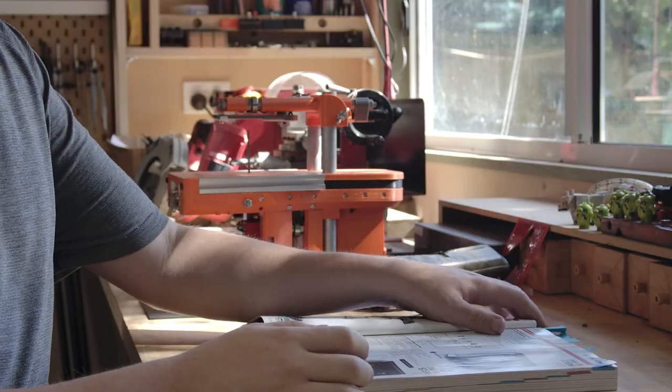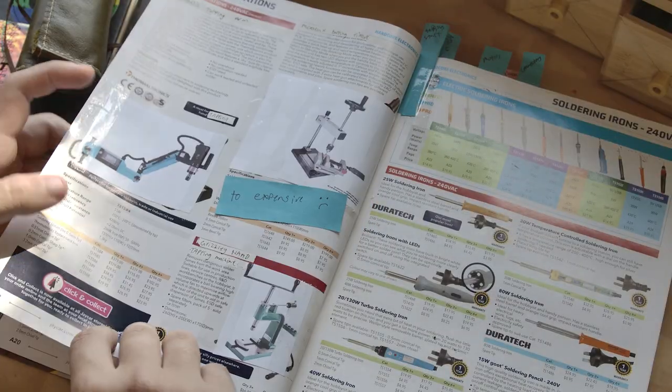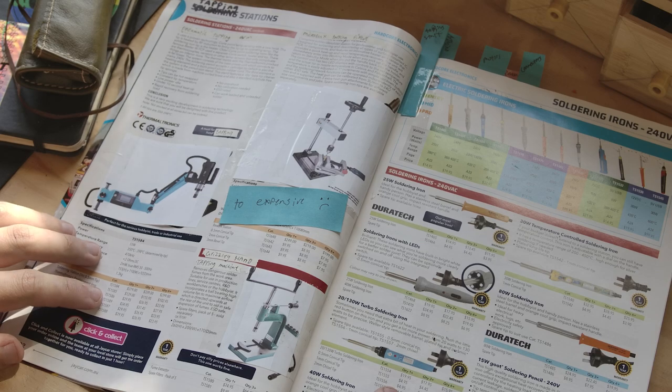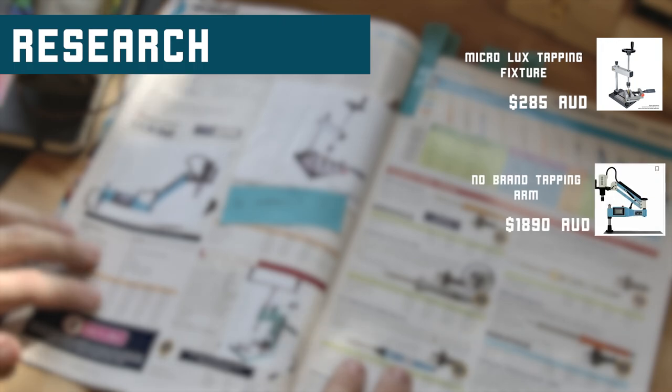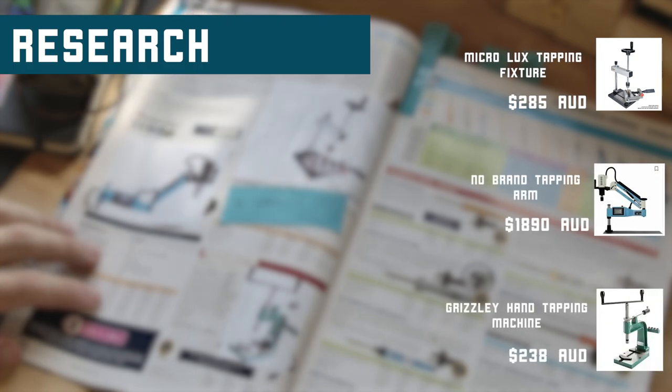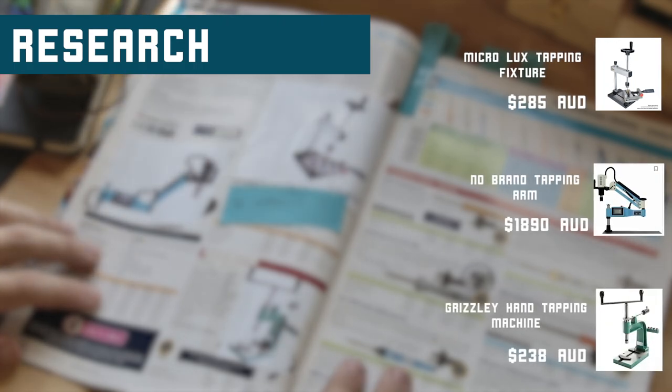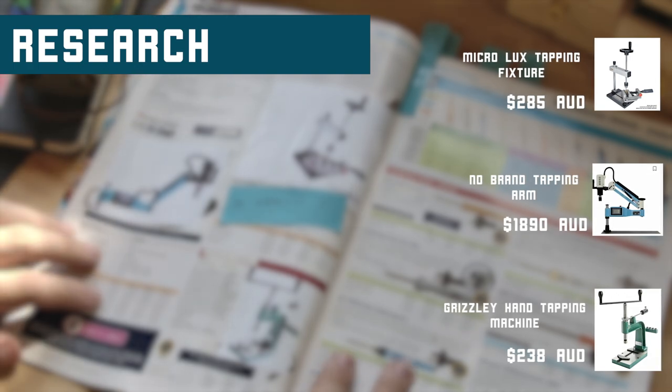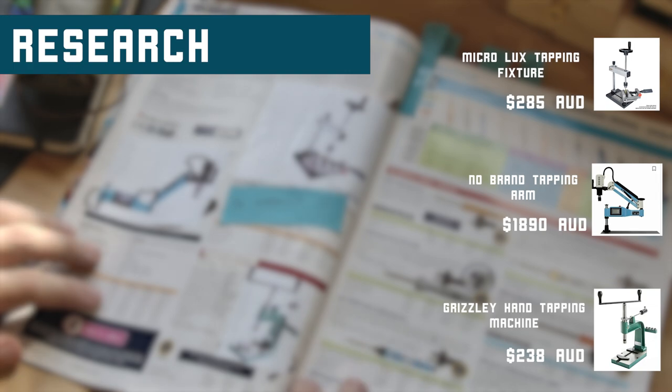The journey to my solution started with some research. Evidently I was not the only one with this issue since commercial options did already exist, called some combination of tap stand, tapping jig, tapping machine, et cetera. These tapping tools serve to keep your taps straight and accurate while supporting the tap to give you more control and ideally break less taps.